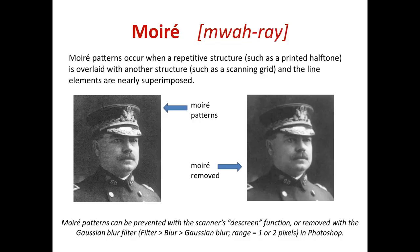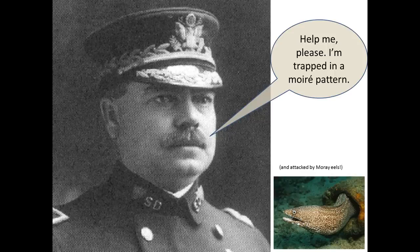Let me say a little more about moiré patterns. Moiré patterns occur when a repetitive structure like a printed halftone — made up of tiny little dots — is overlaid with another structure such as a scanning grid, and the line elements are nearly but not exactly superimposed. In the image on the left you see moiré patterns; in the image on the right, they've been removed. Moiré patterns can be prevented by using the scanner's descreen function. If it's too late to prevent them, they can be removed with the Gaussian Blur filter in Photoshop — Filter > Blur > Gaussian Blur — with a range of one or two pixels.